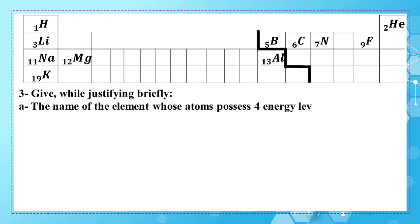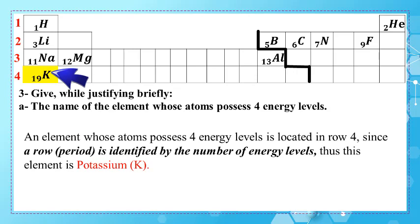In part three, give — while justifying briefly — the name of the element whose atoms possess four energy levels. This means rows one, two, three, and four. The element is potassium, since an element whose atoms possess four energy levels must be located in row four, as a row or period is identified by the number of energy levels. Thus this element is potassium, symbolized by K.